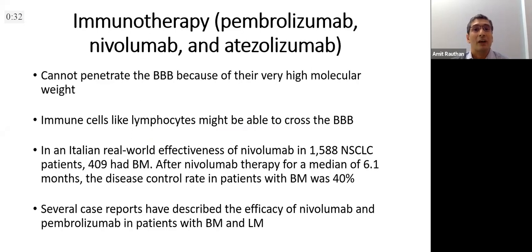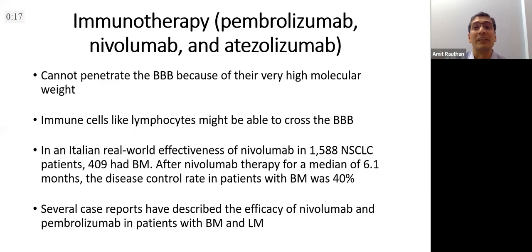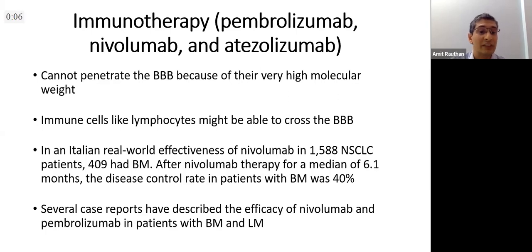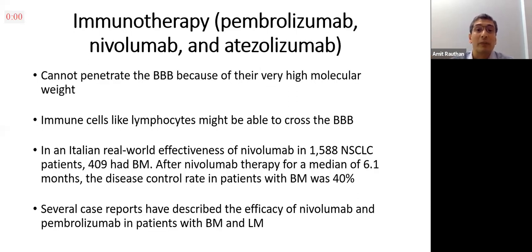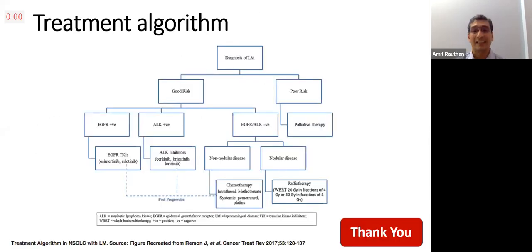My last slide summary: if you diagnose leptomeningeal metastasis, assess performance status and risk factors. For good-risk patients, look at molecular targets. If they have EGFR mutation, the best therapy in the current era could be high-dose osimertinib at 160 mg — though there is data suggesting 80 mg may be adequate. These patients get one opportunity, so we can debate 80 versus 160 mg. Erlotinib pulsatile dosing if patients cannot afford osimertinib — we have seen patients crossing one year with impressive responses despite skin toxicity.